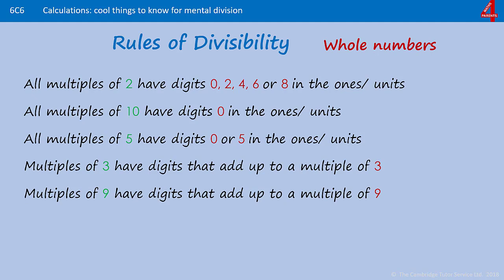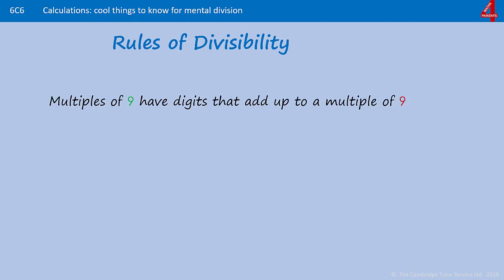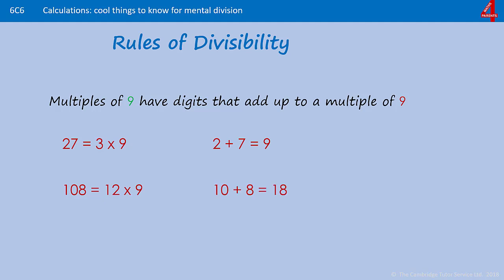The next rule is very similar to the 3's, and that's for 9's. Bearing in mind that 9 is a multiple of 3, it's still worth knowing the 9's as well. Multiples of 9 have digits that add up to a multiple of 9. So 27, which is 3 times 9 — add 2 and 7, you get 9. For 108, which is 12 times 9: 1 + 0 + 8 = 9, or 10 + 8 = 18, which is a multiple of 9. If you get to 18, 1 + 8 = 9, so you can always get back to 9.